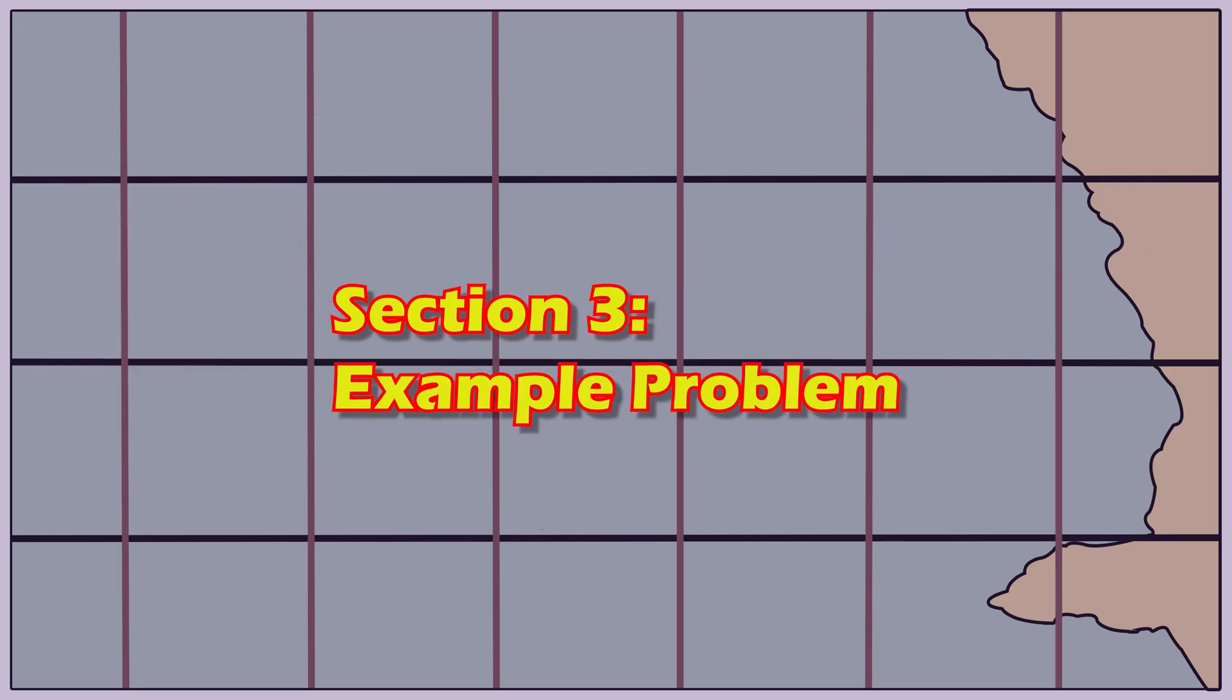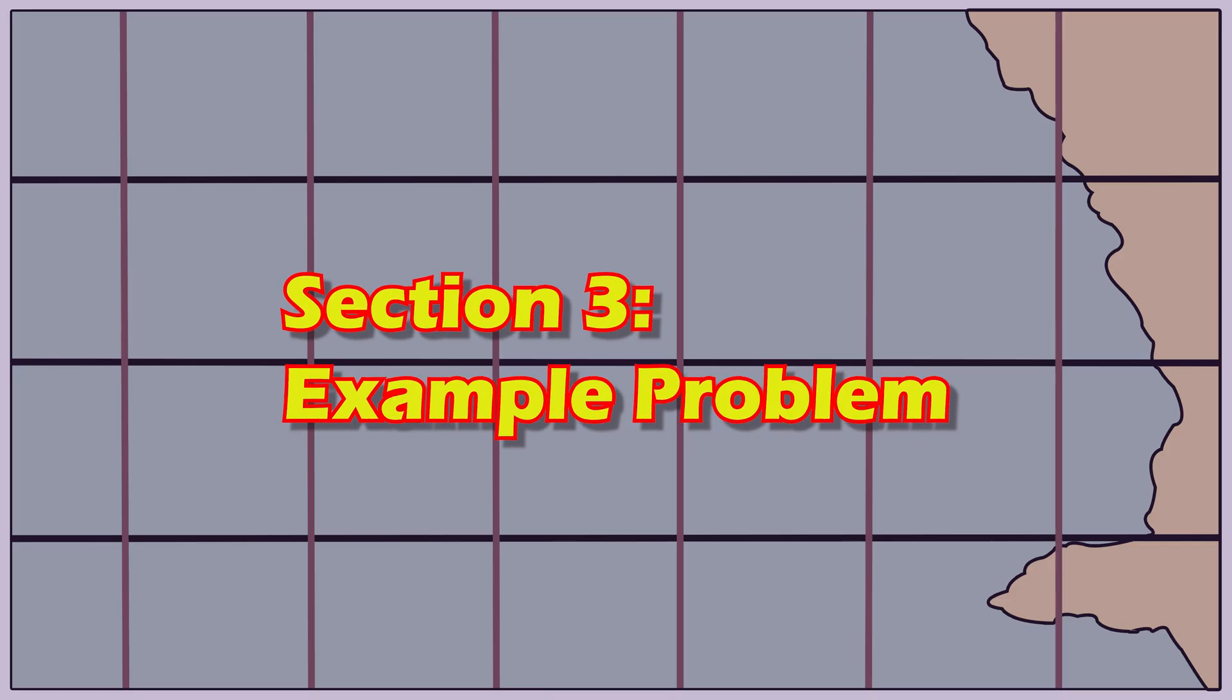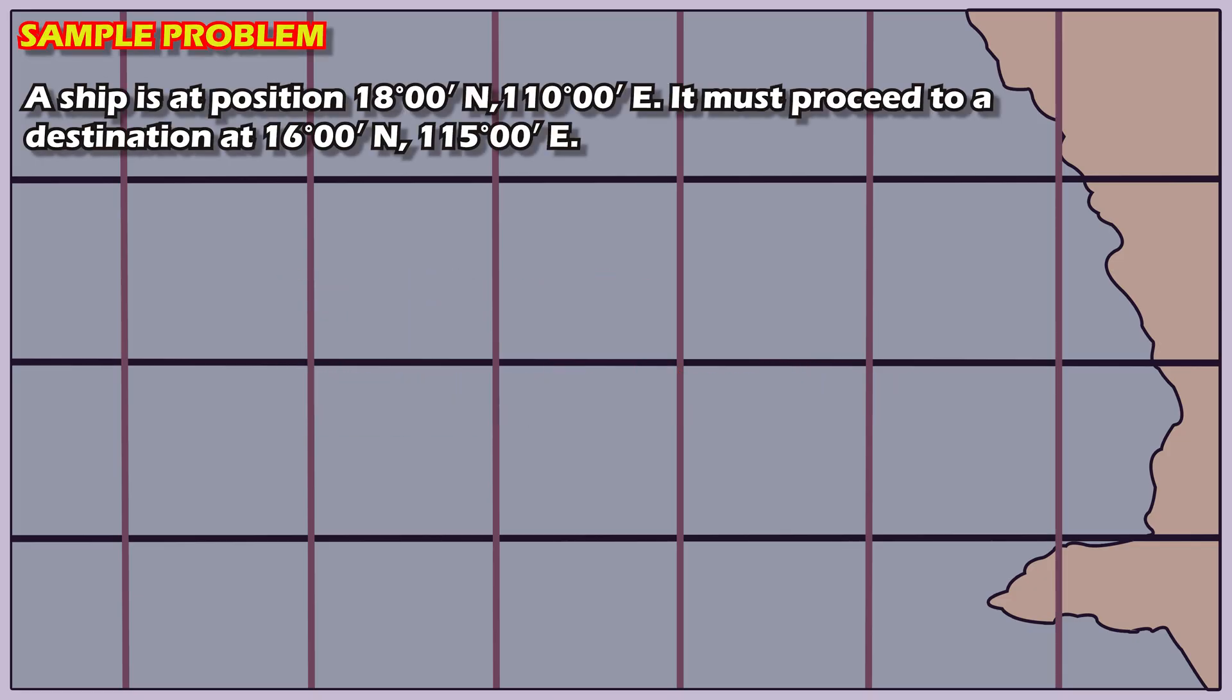Section 3. Example problem. Here's a sample problem. A ship is at latitude 18 degrees north, longitude 110 degrees east. It must proceed to a destination at latitude 16 degrees north, longitude 115 degrees east.